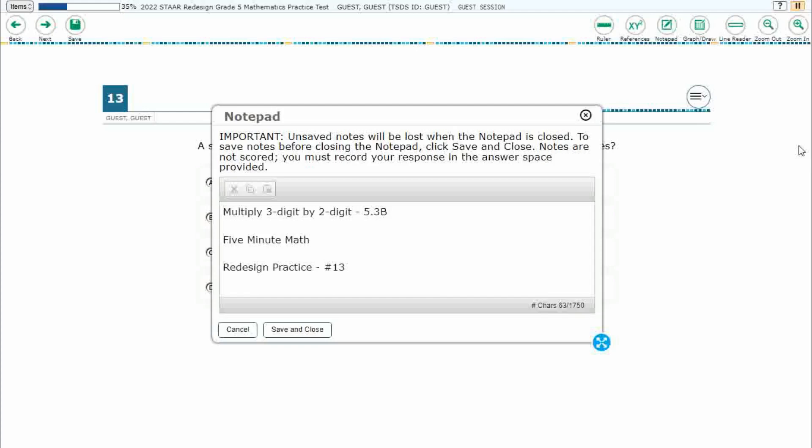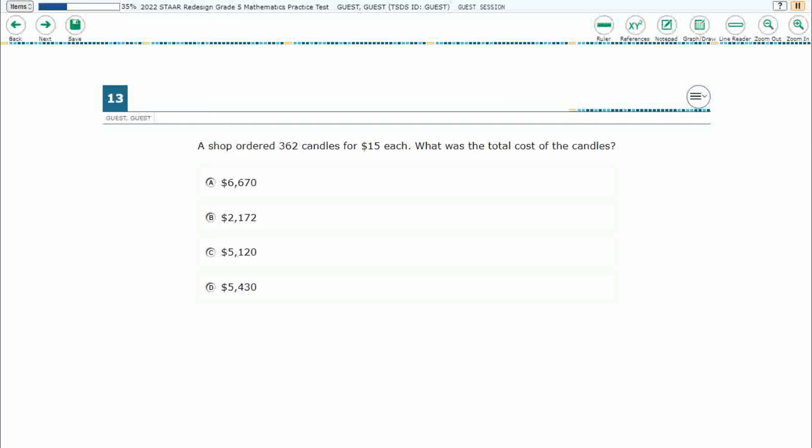Hello and welcome to 5-Minute Math. Today we are looking at the fifth grade concept of multiplying three-digit and two-digit numbers. This is standard 5.3b in the great state of Texas, and we are using item number 13 of the redesign practice online star test.